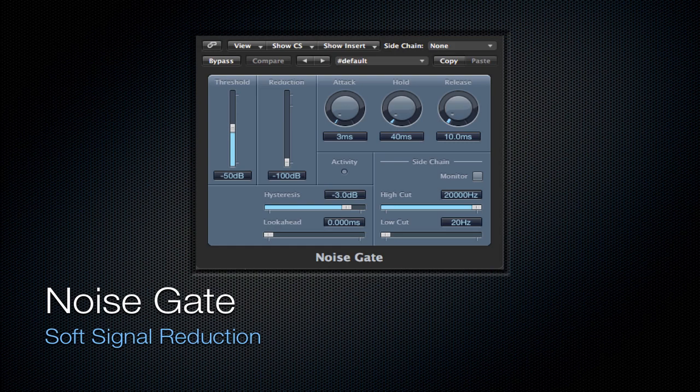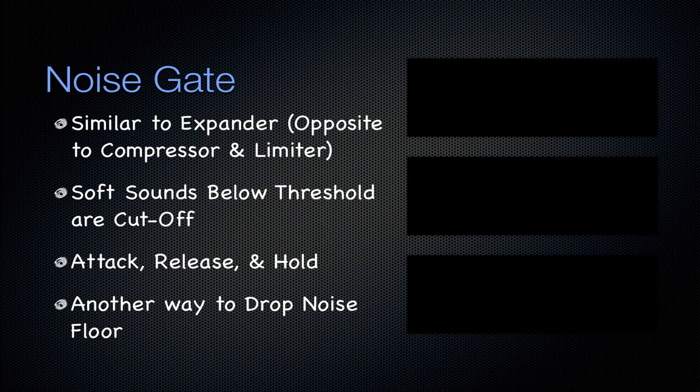Next is the noise gate. It's going to be a soft signal reduction, similar to an expander. A limiter is to a compressor as a noise gate is to an expander. Soft sounds below a threshold are completely cut off — there's no ratio associated with the compression on those low signals. You can work with the attack, release, and hold, and it's yet another way to drop that noise floor out of your track.